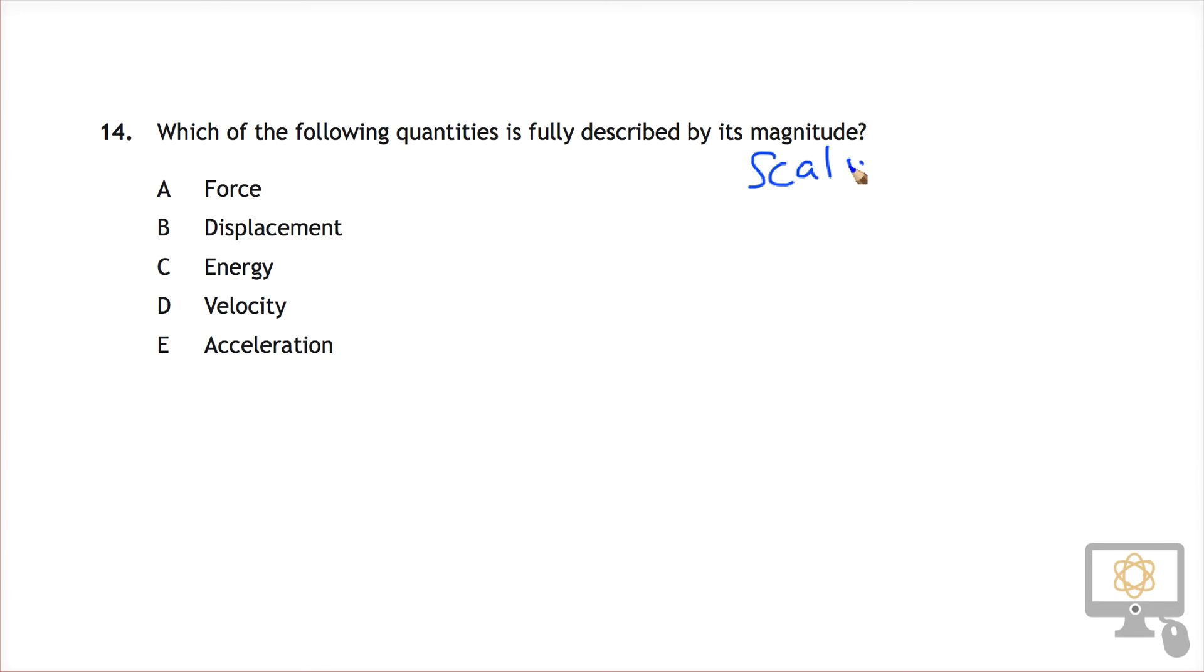If you remember, a scalar has just magnitude alone as its quantity and a vector has magnitude and direction. So it's got that as well.